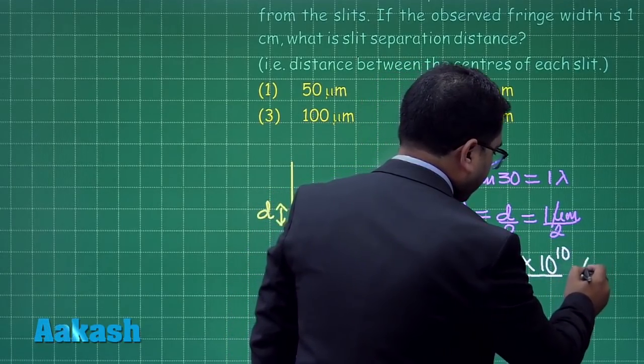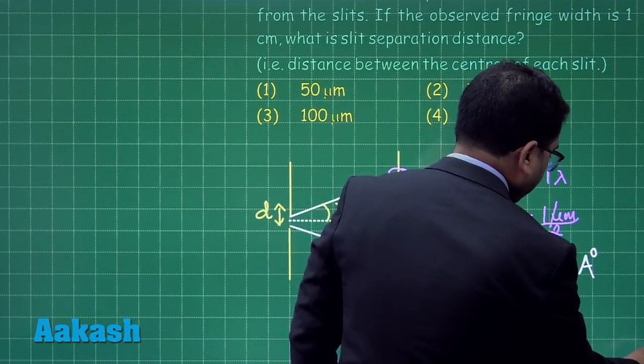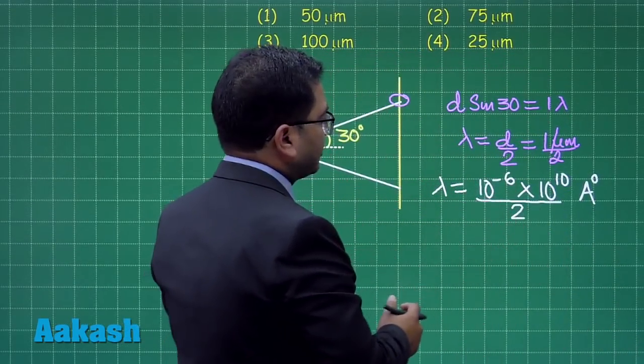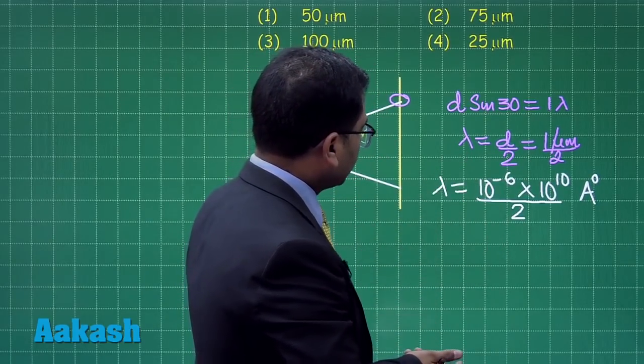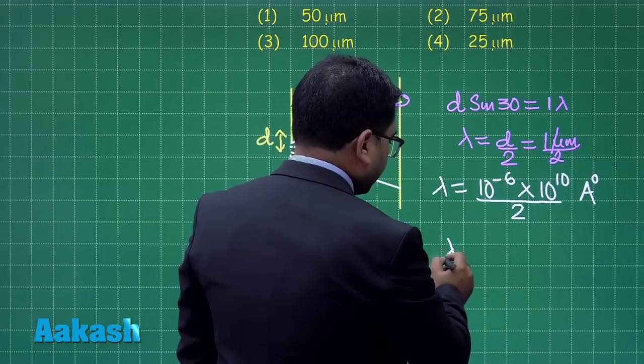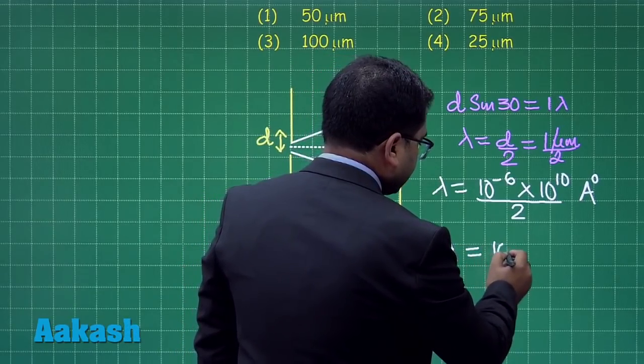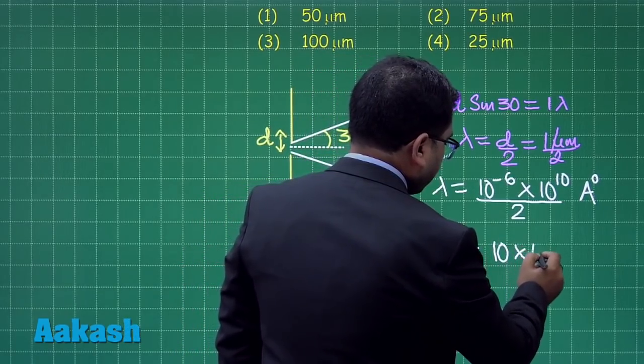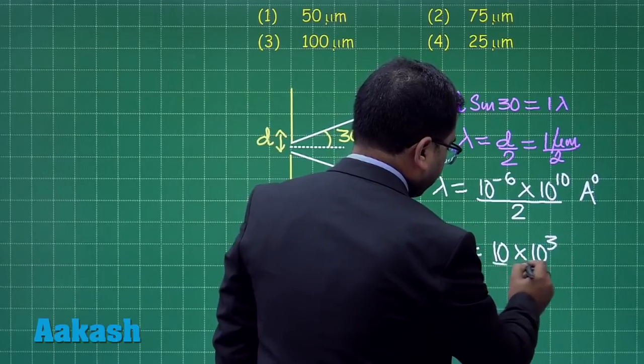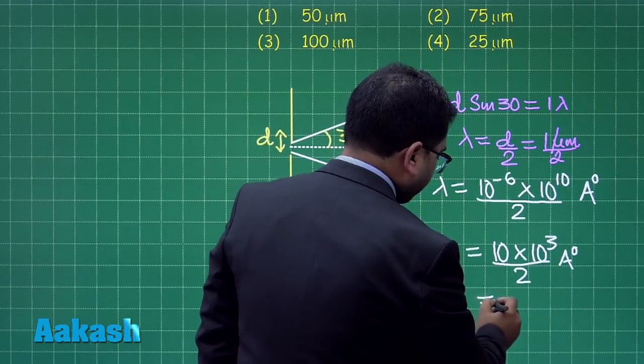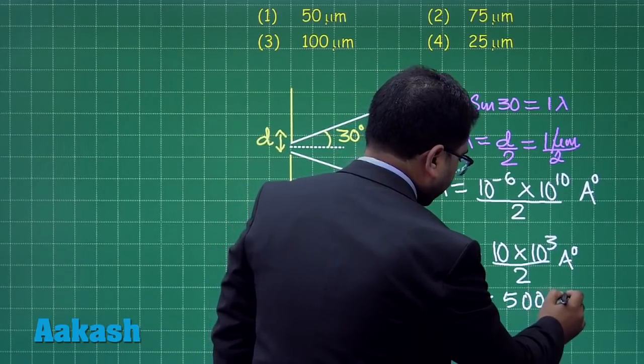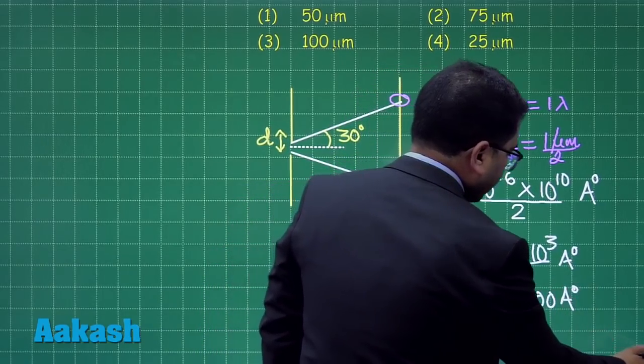Now let me go for a simple calculation. It is 10^4 divided by 2, so that comes out to be 10 × 10^3 divided by 2 angstrom, and the value will straightforward be equal to 5000 angstrom.